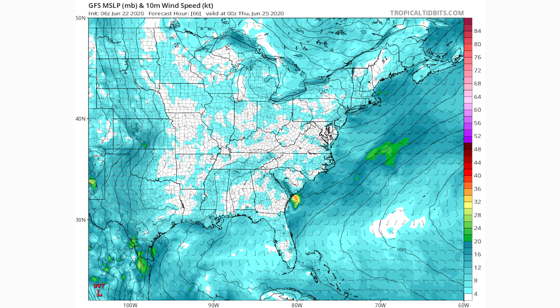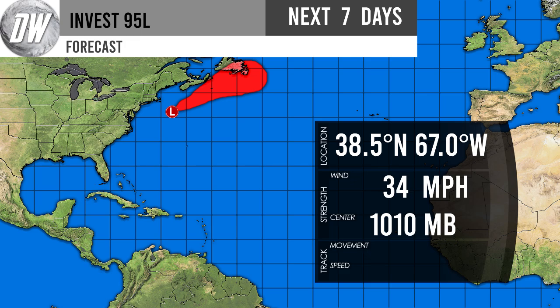Here we are looking at the Direct Weather official forecast for Invest 95L in the next seven days. Its location is 38.5 degrees north by 67 degrees west, winds are currently 34 miles per hour, and the low pressure center is a 1010 millibar system. As you can see on our red track map, there is a possibility for a Newfoundland impact but also good odds it stays far south of Newfoundland, so we'll really have to wait and see as time moves forward.